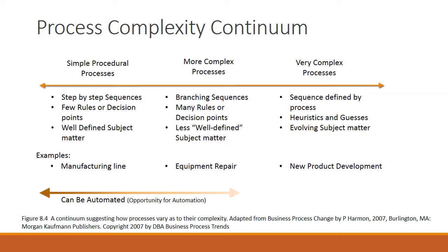As seen from Figure 8.4, processes can range from simple to very complex. This range forms a continuum. I will be using examples from the natural gas industry, where I have over 20 years experience, to articulate the differences between the levels of complexity.